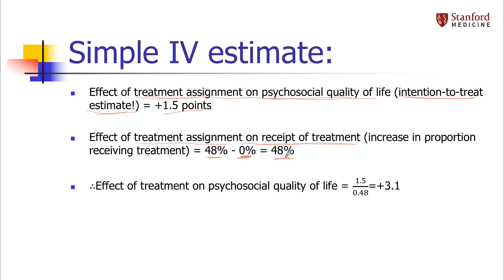To get our IV estimate, we divide the intention-to-treat estimate by the difference in proportions receiving treatment in the two groups, and we come out with an estimate of 3.1. Notice that as long as we have non-compliance in the randomized trial, the denominator is going to be less than 1, which means our IV estimate is always going to be bigger — farther from the null — than our intention-to-treat estimate. However, it's also going to be less precise.